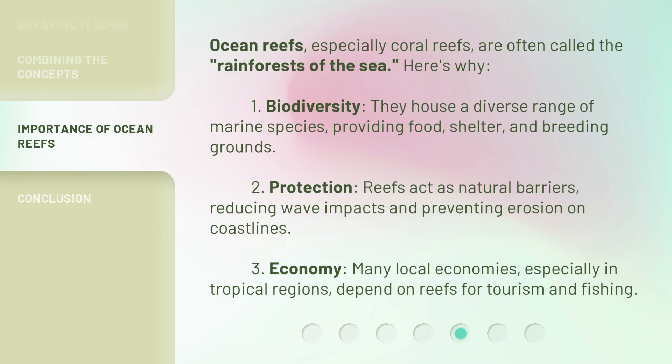Ocean reefs, especially coral reefs, are often called the rainforests of the sea. Here's why. First, biodiversity: they house a diverse range of marine species, providing food, shelter, and breeding grounds.